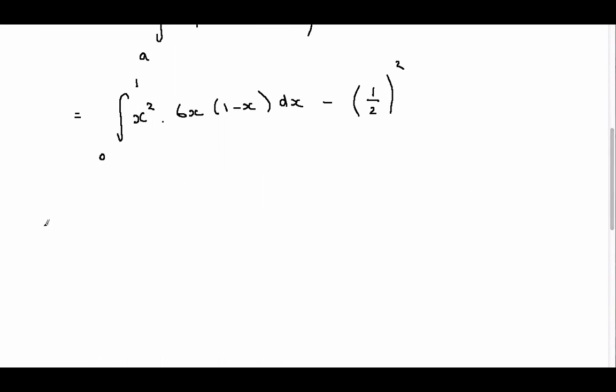So if we just take out integral, so it's integral between 0 and 1 and expanding out the brackets, we'll get 6X cubed minus 6X to the 4 and then performing the integration. So 6X to the cubed goes to 3 over 2 X to the 4, minus 6X to the 5 over 5.